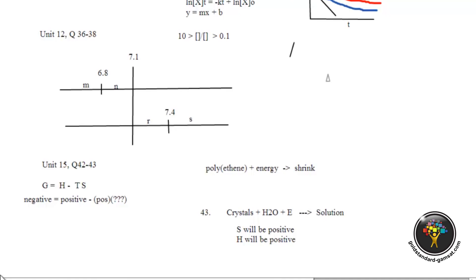So S and H are both positive in the forward reaction. However, the question is saying predict the signs of S and H when potassium nitrate is crystallized from aqueous solution.